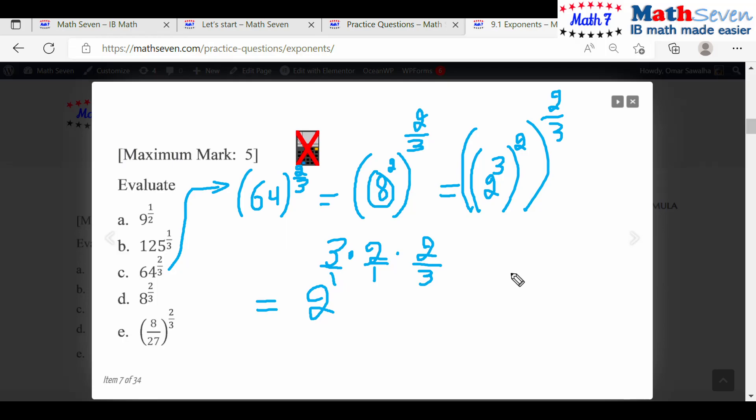Look, let me change colors. This 3, this 3, this 3, bye-bye. That means you're left with 2 to the power of what? 2 times 2, which is 4. What's 2 to the power of 4? Which is 16. So your answer is 16.